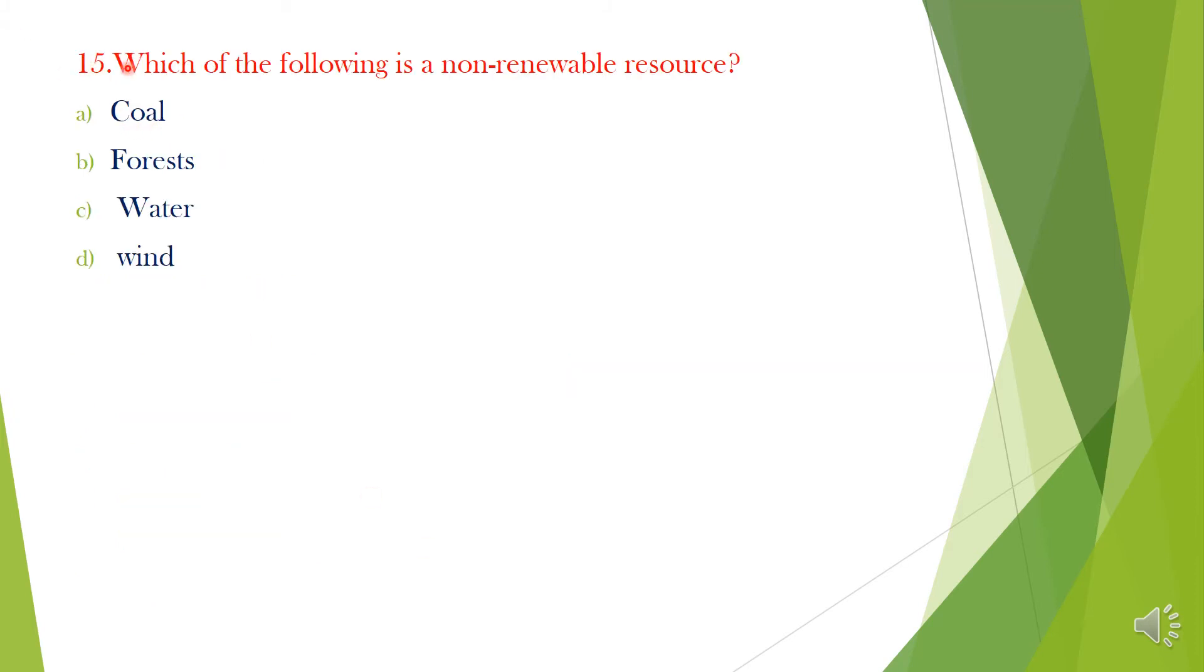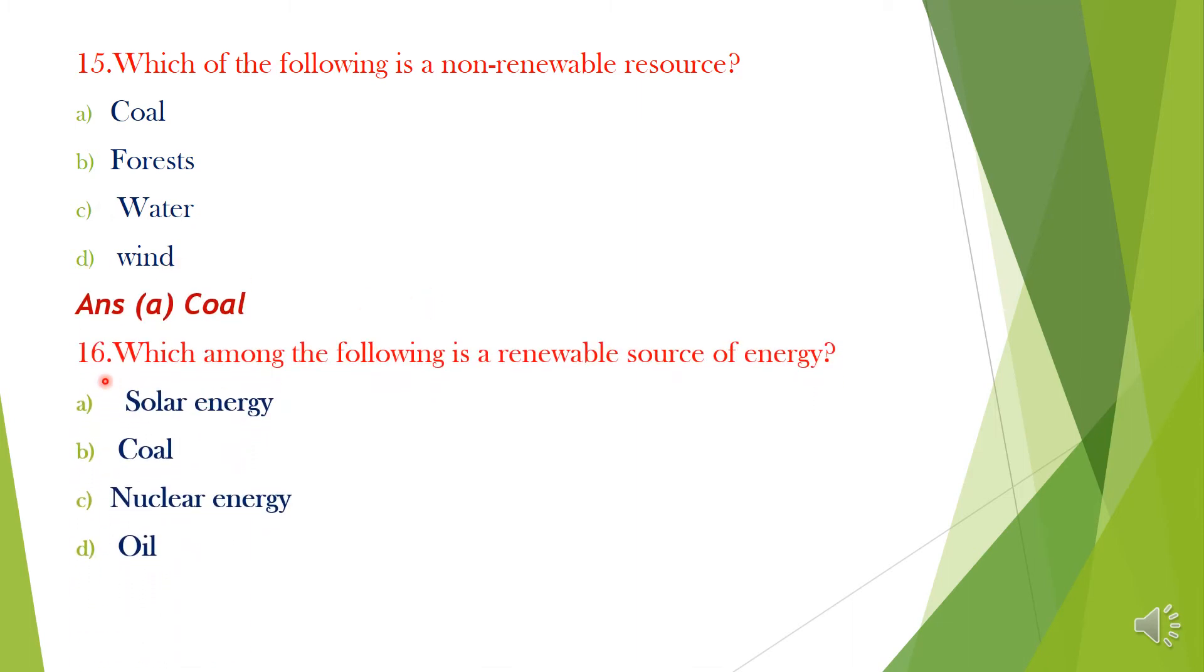Question 15. Which of the following is a non-renewable resource? A. Coal, B. Forest, C. Water, D. Wind. Answer is Option A, Coal. Question 16. Which among the following is a renewable source of energy? Option A. Solar energy, B. Coal, C. Nuclear energy, D. Oil. Answer: A, Solar energy.